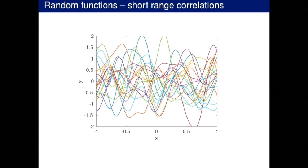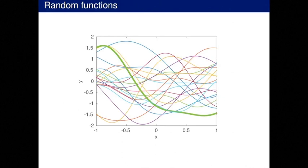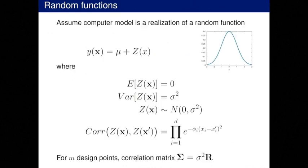Here I have several draws of a random function — with shorter range correlations, more wiggly. Our computer model — we don't actually observe the whole function, we observe just a few evaluations, and it's going to be one of these draws. People sometimes think you're assuming the computer model is Gaussian, but there's nothing particularly Gaussian-shaped about these functions. It just happens to be a draw from this class of functions. What's Gaussian is that at any input location, the marginal distribution is Gaussian. That's our emulator setup.